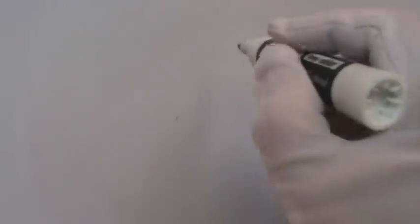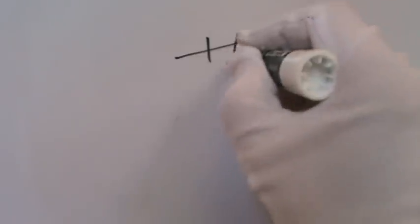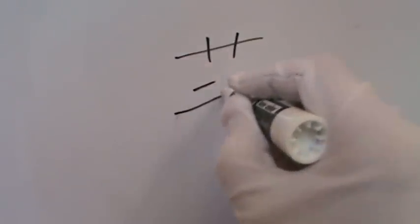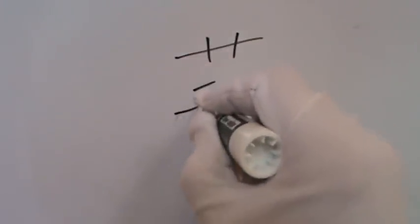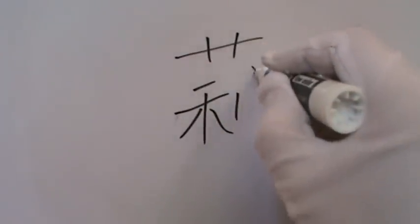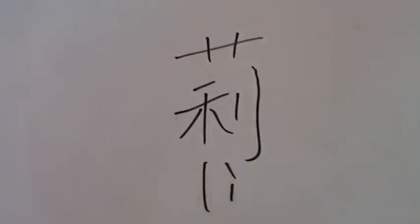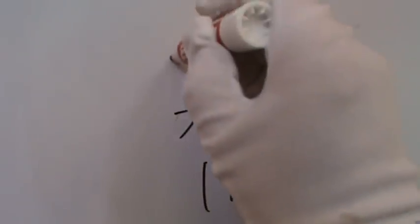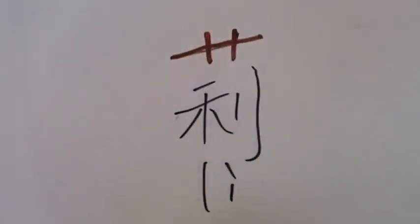And now let's go to number eight: 莉 (Li), written with 10 strokes. Li is used in 茉莉 (Mo Li), meaning Jasmine. It's also used in a girl's name. And the radical is the top part here.